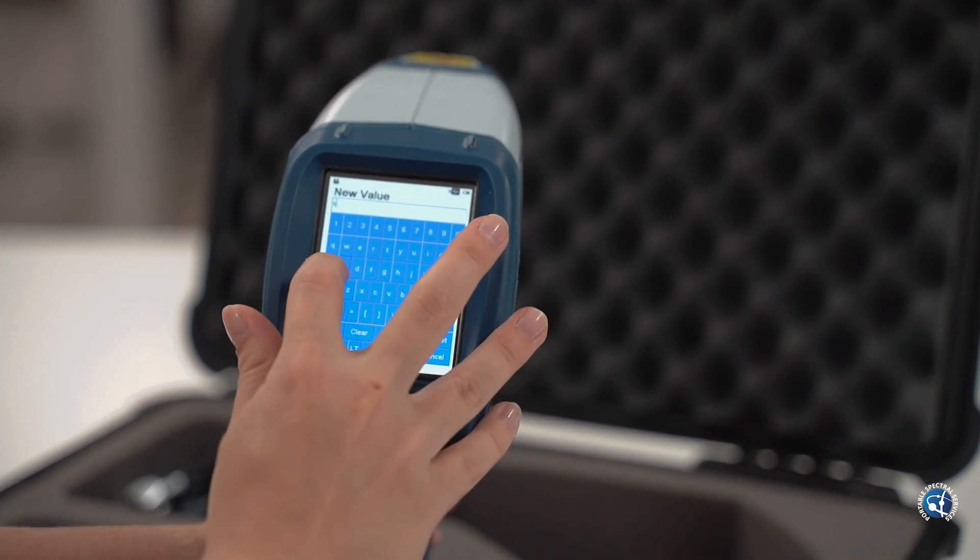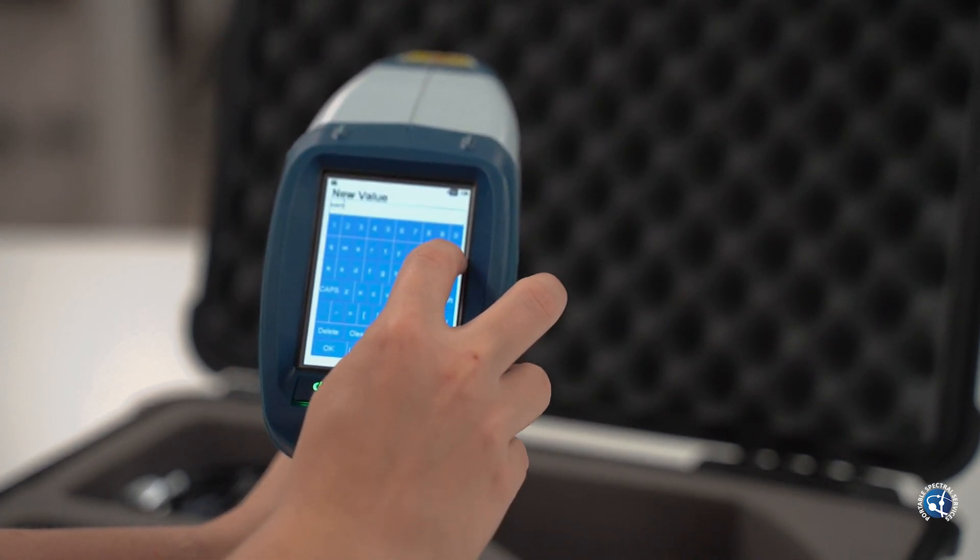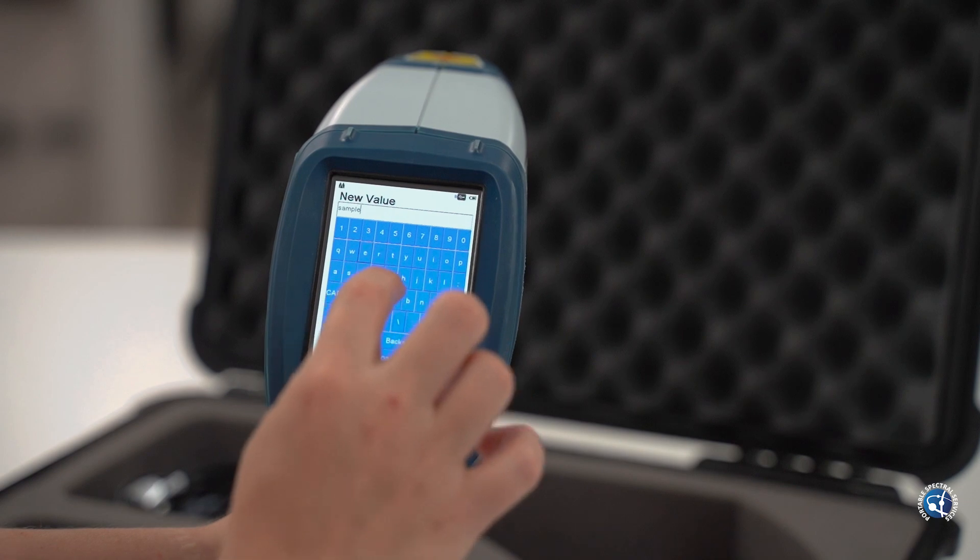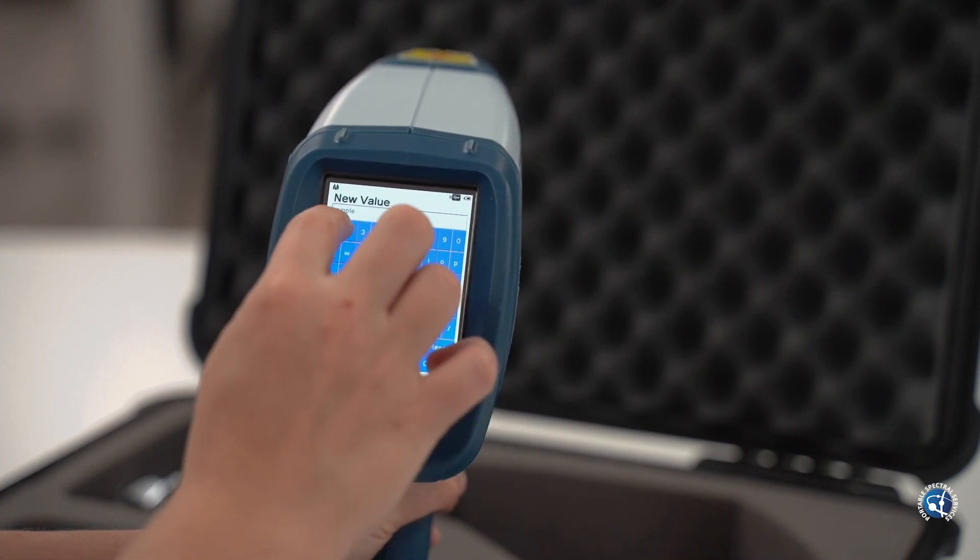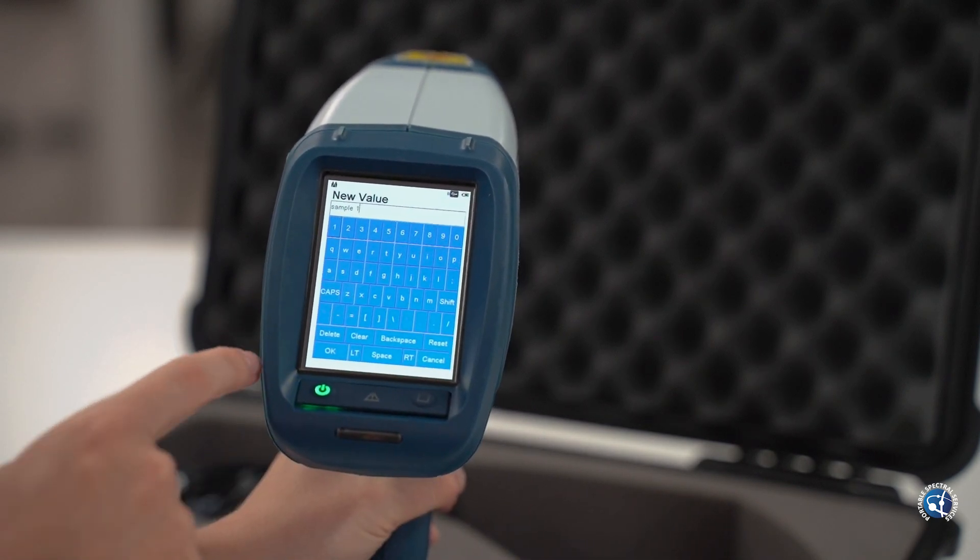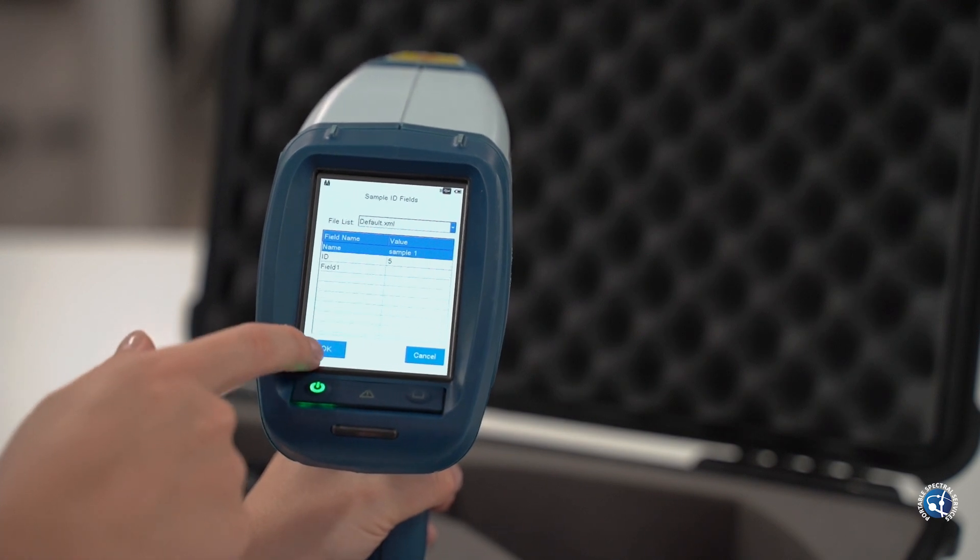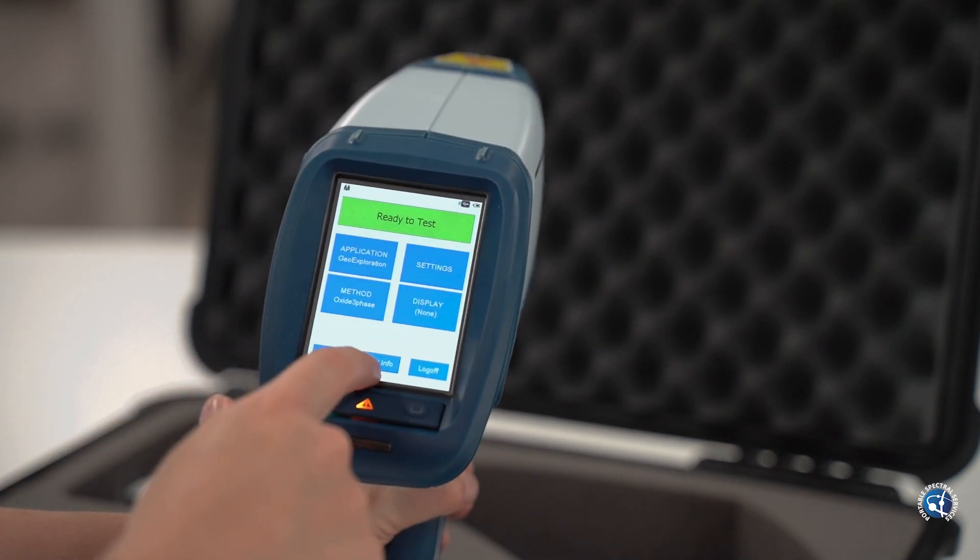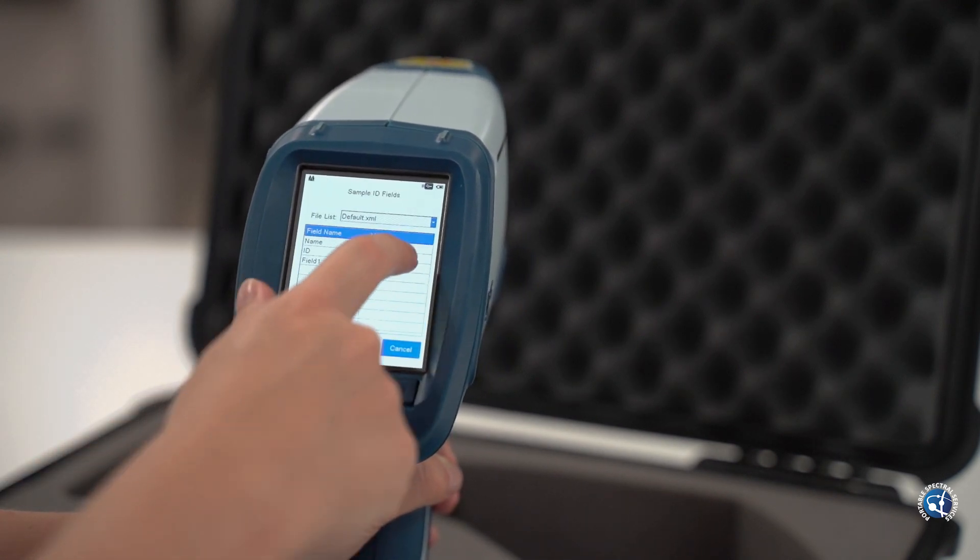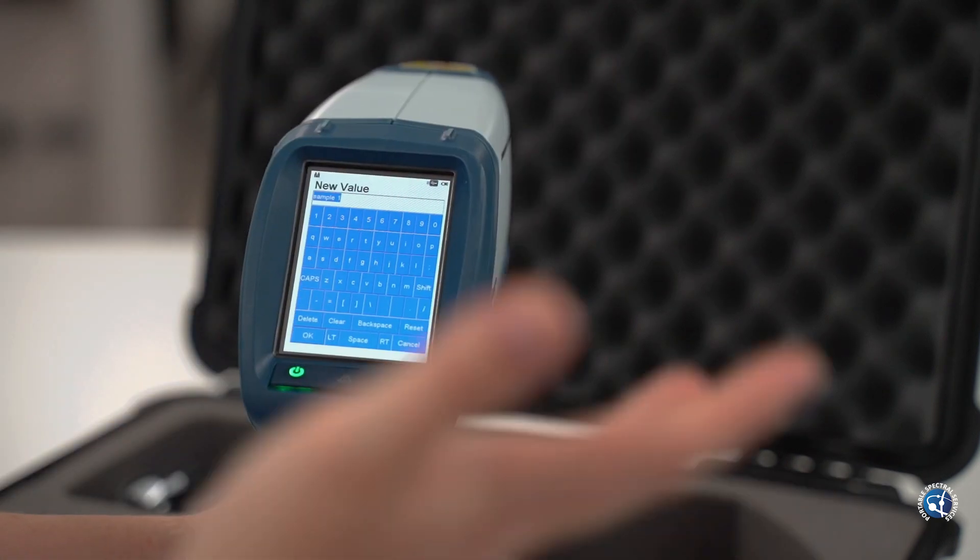If you want something a bit more customized you can do so by clicking edit info, configure and here you can add new rows and create more customized sample identification for your project, such as countering where you can auto-increment sample IDs so you don't have to change the name manually every single analysis.